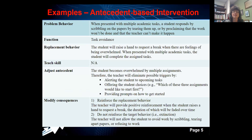Let's look at an antecedent-based intervention. The student's problem behavior is that when presented with multiple academic tasks all at once, the student responds by scribbling on papers, tearing them up, or proclaiming that the work won't be done and the teacher can't make it happen. The function is to escape or avoid — task avoidance. The replacement behavior is that we want the student to raise a hand to request a break when feeling overwhelmed, confirmed through interviews, observations, and ABCs.